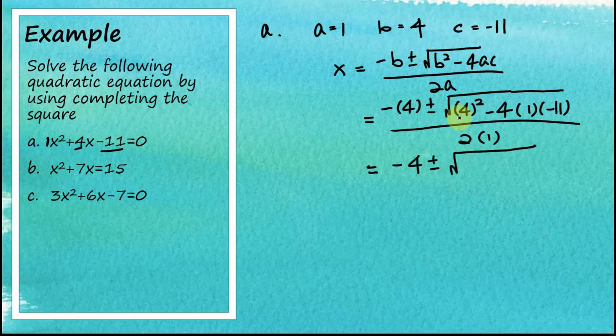Now 4 squared equals 16. Negative 4 multiplied by 1 multiplied by negative 11, so this becomes positive 44. Negative multiplied by negative gives positive. Over 2, and we have negative 4.